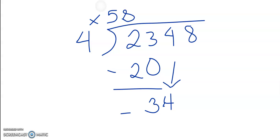So our difference would be 2. So now we have 28 and 4 times 7 is equal to 28.